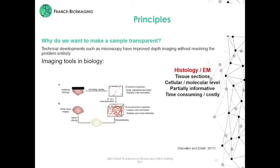But these techniques are time-consuming, costly, and partially informative. Classical histological techniques are based on cutting the tissue into thin sections, which are stained and examined under a microscope. This is a fast and convenient approach, but it only provides information on a small part of the available tissue.